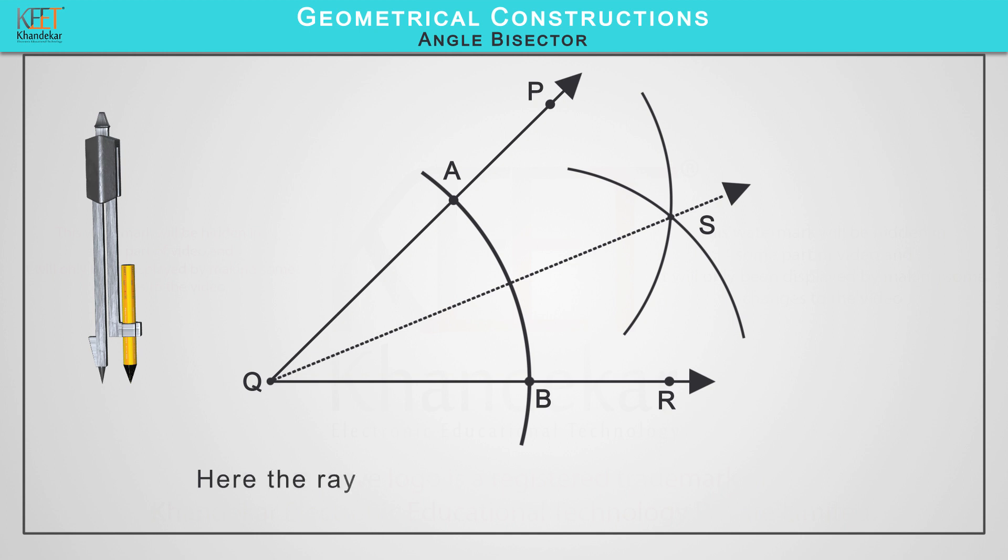Here, the ray QS is the angle bisector of angle PQR. Therefore, angle PQS is equal to angle SQR is equal to half angle PQR or angle PQS is congruent to angle SQR.